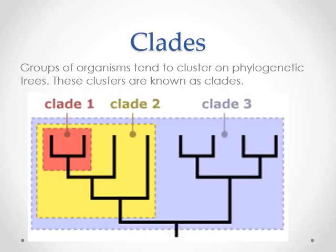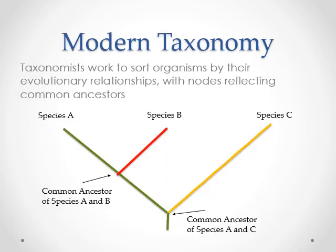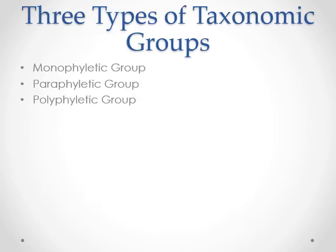We're splitting organisms into what are called clades - clades are just groups, clusters. They can be described in several ways. Modern taxonomy - naming things and doing systematics - is trying to sort organisms based on their evolutionary relationships, not just how they currently look, but how they were related in the past. There are three broad types of clades: monophyletic, paraphyletic, and polyphyletic.